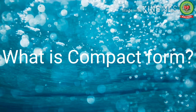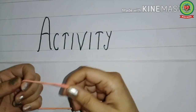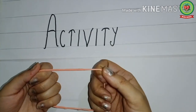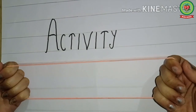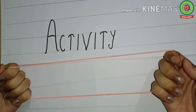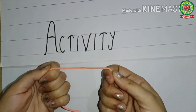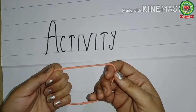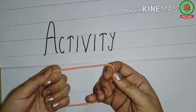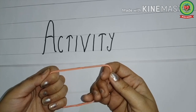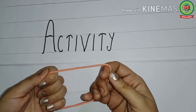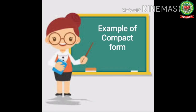Now with an activity I will teach you what is compact form. In the last video I taught you what is expanded form. When we stretch a rubber band it becomes the expanded form, and when we release it, it comes to its original position — and this is compact form, or standard form, or short form.